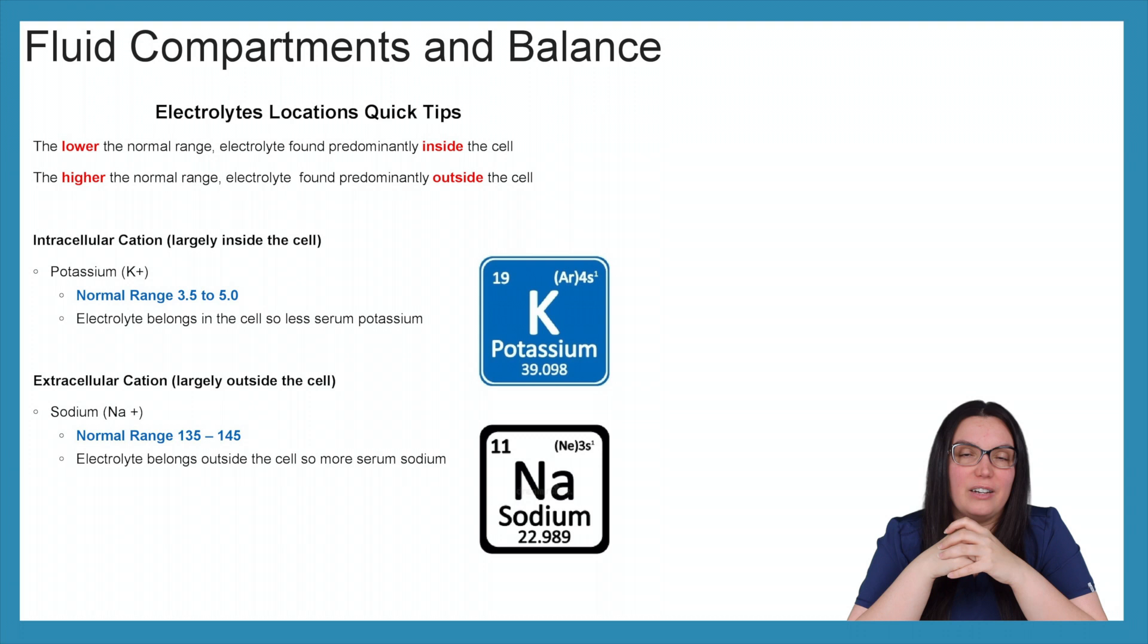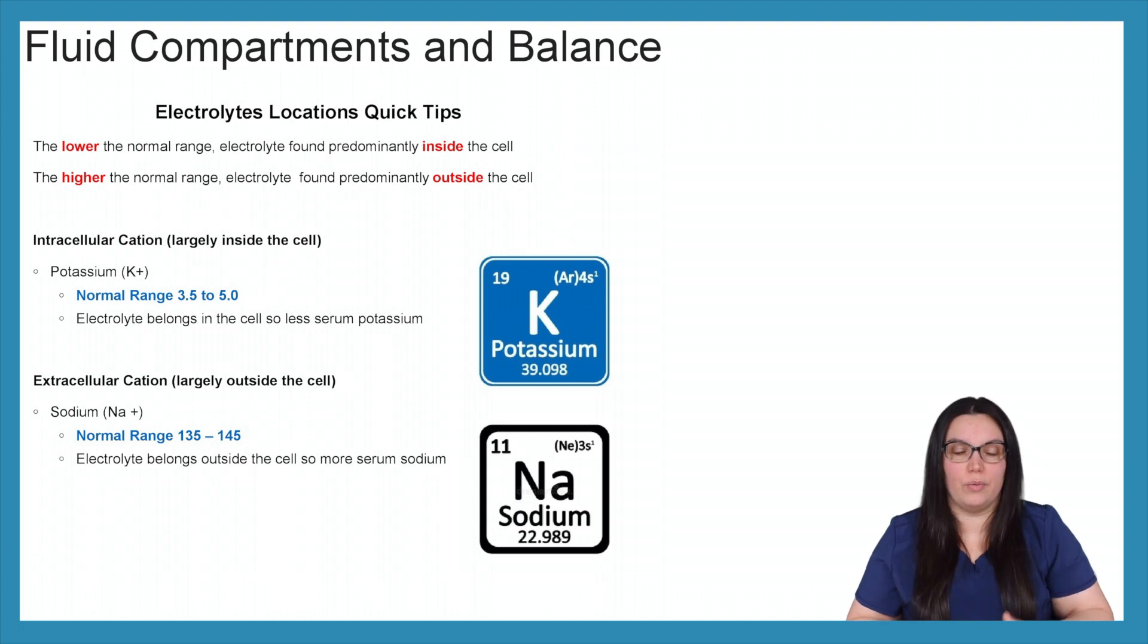So I wanted to help you, especially when it comes to understanding your NCLEX and your nursing school exams, is where our electrolytes are located based on their normal range. So this is your electrolytes, locations, quick tips, make sure that you write this down. So the lower the normal range, the electrolyte is found predominantly inside the cell. That makes sense, right? So when we draw our labs, we're looking at serum electrolytes. If it's not located in the serum, then it's located inside of the cell. So the lower the normal range, we know that it's predominantly inside the cell.